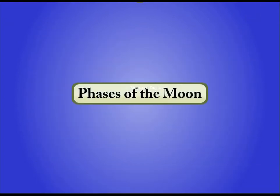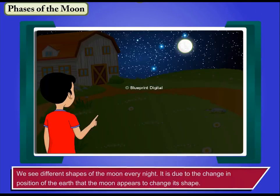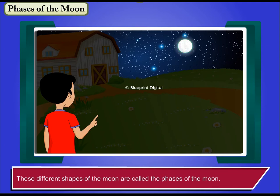Phases of the Moon. We see different shapes of the Moon every night. It is due to the change in position of the Earth that the Moon appears to change its shape. These different shapes of the Moon are called the phases of the Moon.